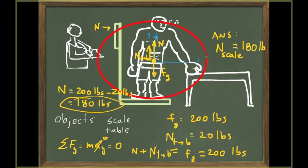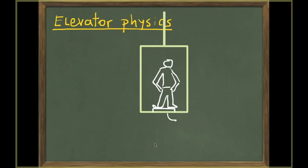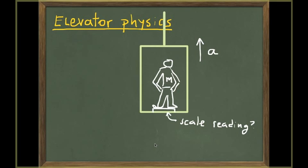Now let's talk about what I call elevator physics. Let's look at some of the physics that happens when a person is inside an elevator that is moving. Let's assume the elevator is accelerating upwards with an acceleration A, and what we want to figure out is the scale reading. If the person is standing on a bathroom scale, what is the reading on the scale? As pointed out before, the scale reading is equal to the normal force that the scale puts on the person.